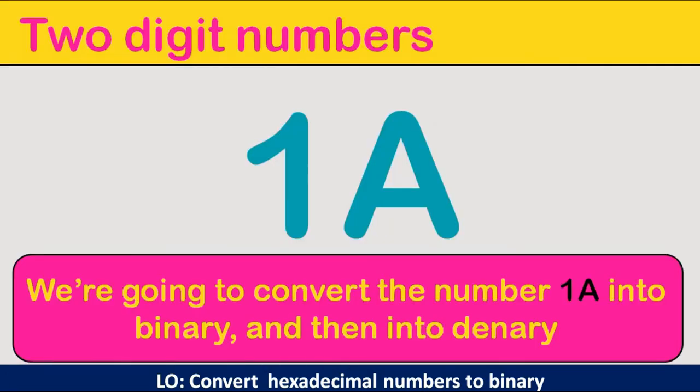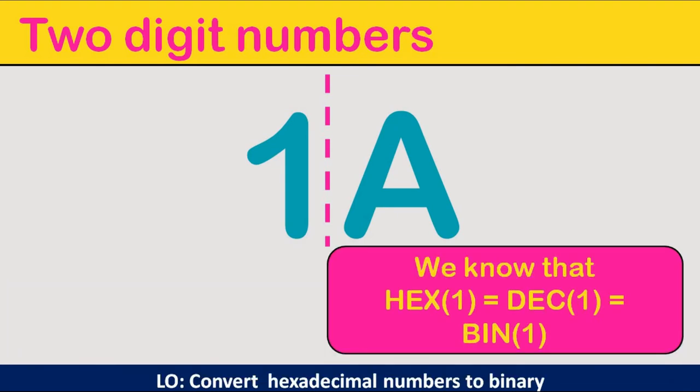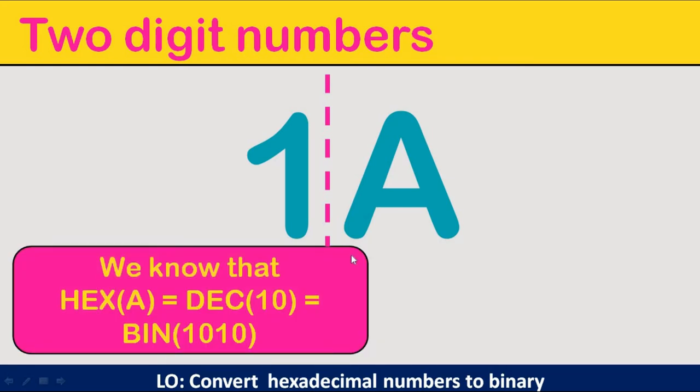It is time for us to now convert 1A to binary, then we will eventually convert it to denary. To convert, we need to split the 1 and the A, so that we are able to see what are the values that correspond to each digit. As you know, 1 is the same as in hexadecimal and also in binary, and this gives us 0001.